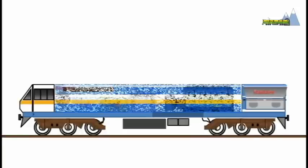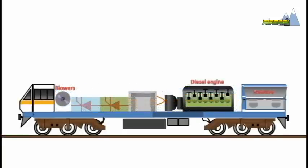To sum up, a diesel internal combustion engine drives a generator to produce alternating current.